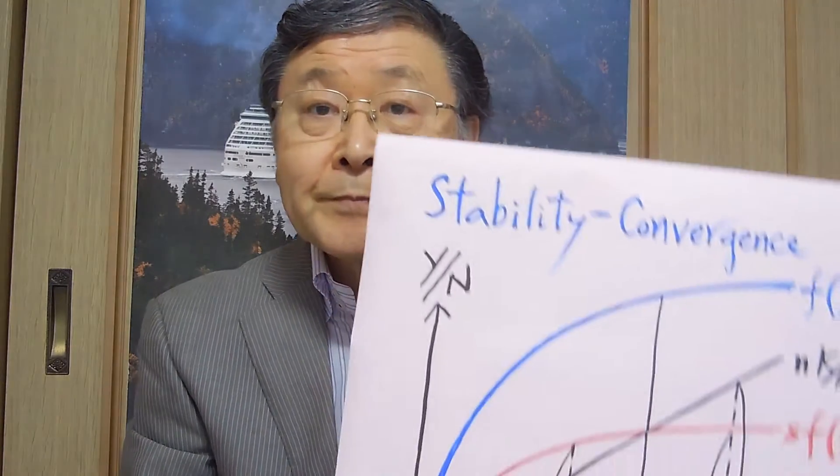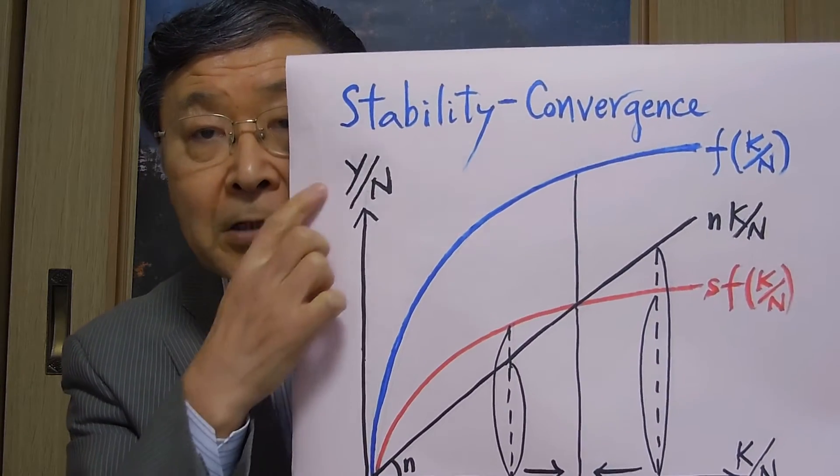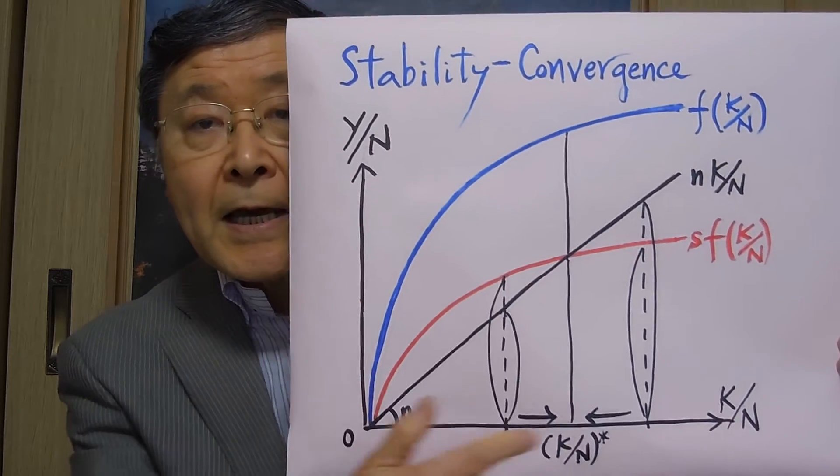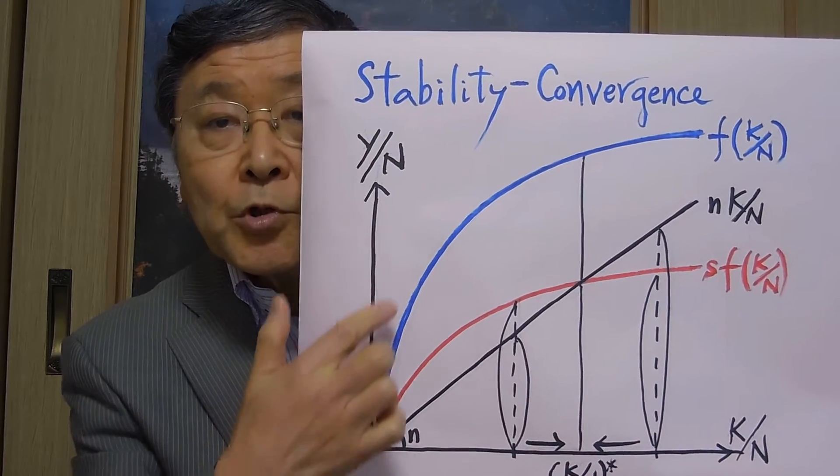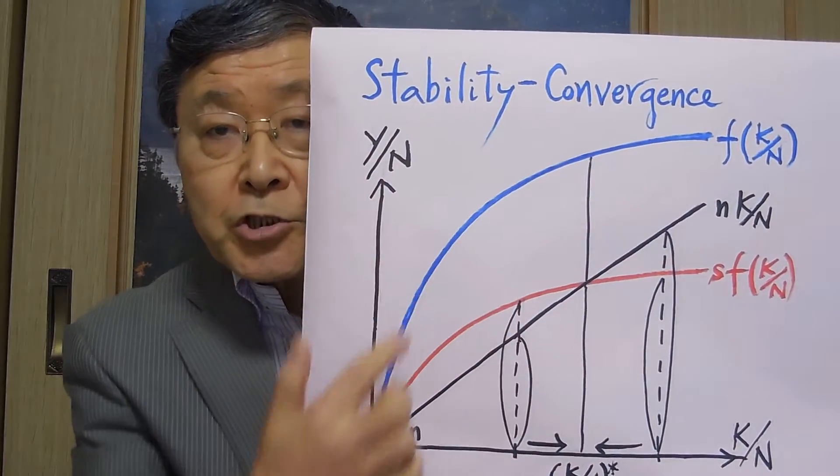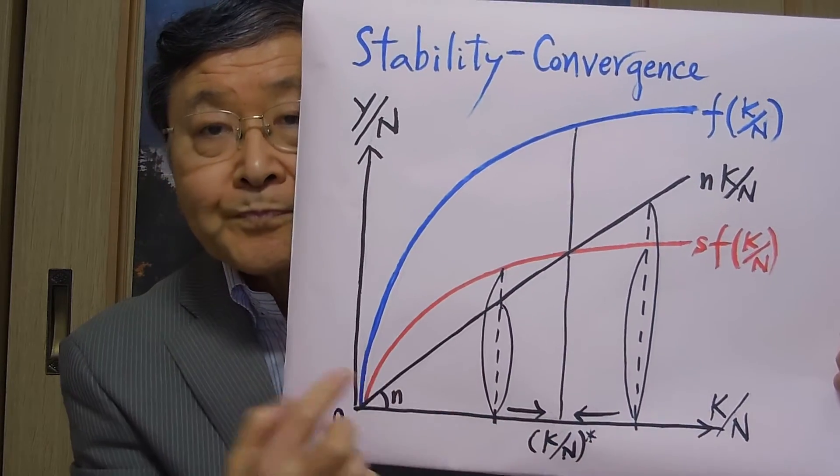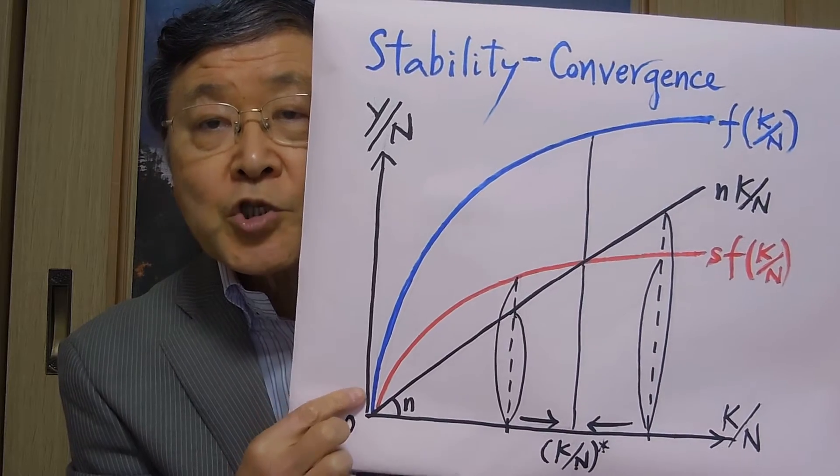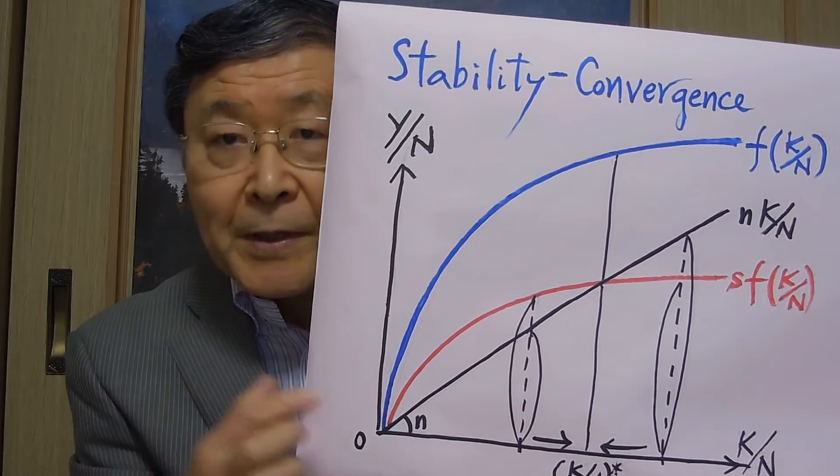In this Solow model, we can show that there will be a stable equilibrium in the following sense. Here is the same diagram, measuring output-labor force along the vertical axis and capital-labor ratio along the horizontal axis. And this blue curve is the relationship between output-labor ratio and capital-labor ratio. Now, first, we assume that the saving ratio is constant, like 0.2 or 0.3 or something like this.